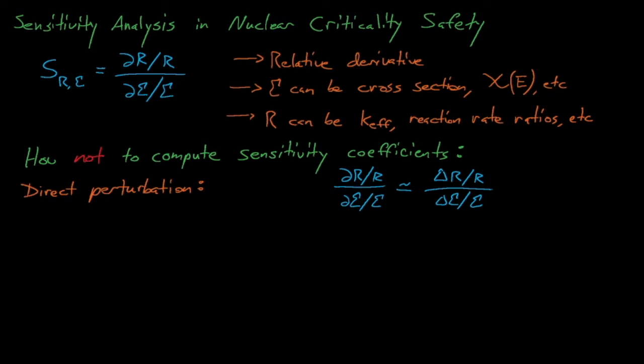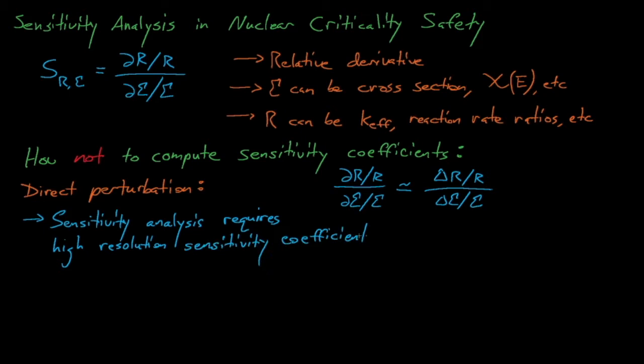To make things even more complicated, this approach quickly runs face-first into the curse of dimensionality when applied to criticality safety problems. In the next few lectures, we'll discuss how these sensitivity-based USL methods require very high-resolution sensitivity coefficients, which means that computing direct perturbation sensitivity coefficients for a reasonably complex nuclear criticality safety problem will be enormously time-consuming.